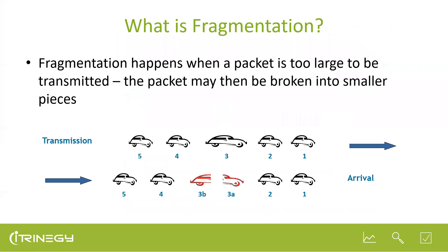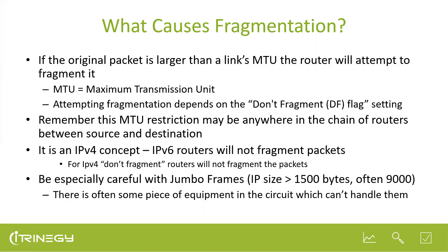Beginning with fragmentation: it has a pretty obvious definition. Fragmentation happens when a packet is simply too large to be transmitted across a particular link. The packet is broken — shown here as a stream of vehicles — with a large packet being split into two components, three-A and three-B. If the original packet is larger than a link's MTU (Maximum Transmission Unit), then a router in front of that link will attempt to fragment it if it can.